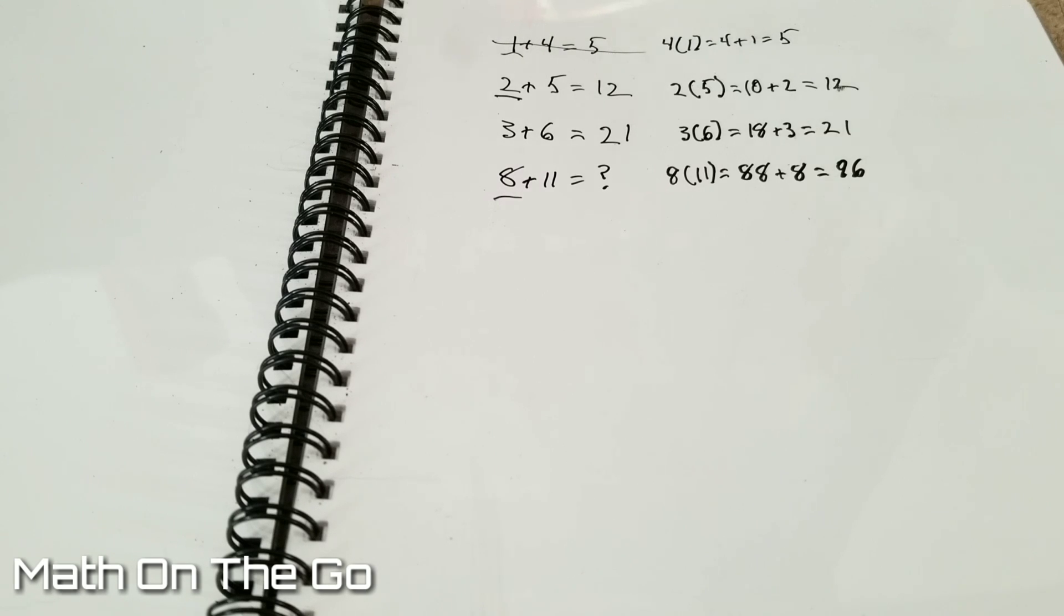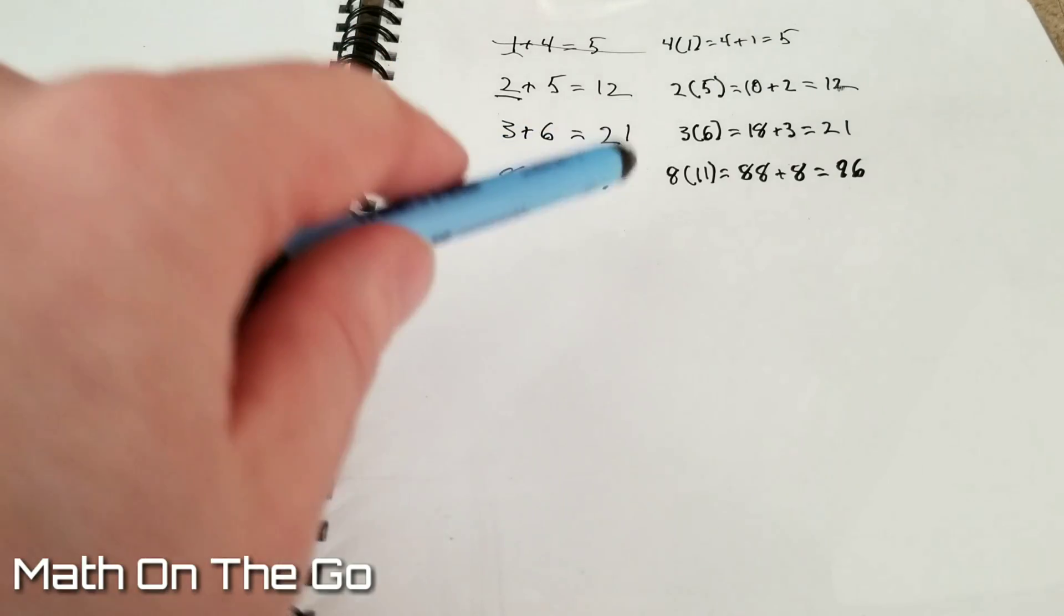That's just your typical addition. But then the next two after that, they just don't make sense. So you got to play around with it and try and figure out what's going on. And then once you get that pattern down, you can figure out what the missing number is here.